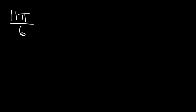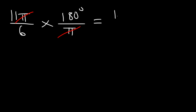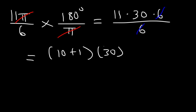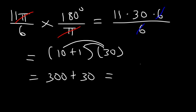Let's convert 11π over 6 into degrees. Multiply by 180 over π and cancel π. Write 180 as 30 times 6 and cancel 6, leaving 11 times 30. Since 11 is 10 plus 1, distributing 30 gives 300 plus 30, so the final answer is 330 degrees.